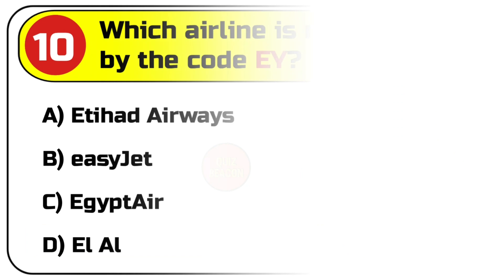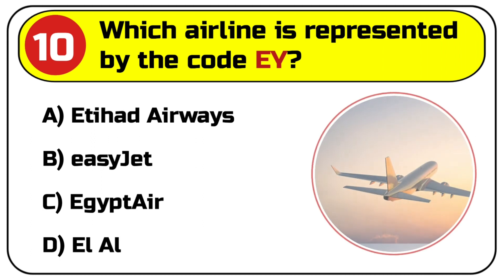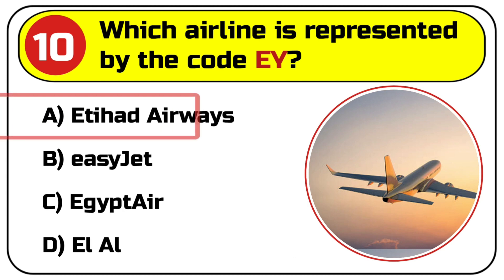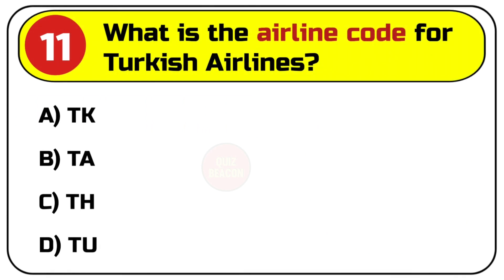Question number ten: which airline is represented by the code EY? Options are A. Etihad Airways, B. EgyptAir, C. Egypt Air, D. LL. Correct answer is A. Etihad Airways.